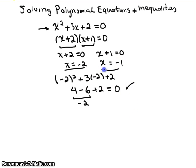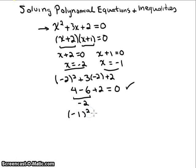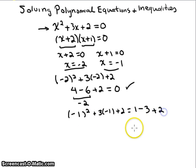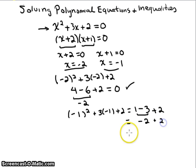Let's check x = -1. We plug in negative one: (-1)² + 3(-1) + 2. Negative one squared gives us one; three times negative one gives us negative three; and two is left over. One minus three gives us negative two; we add two, and once again we get zero.